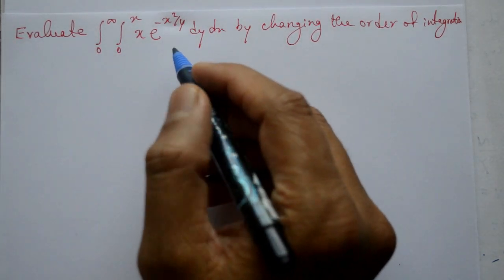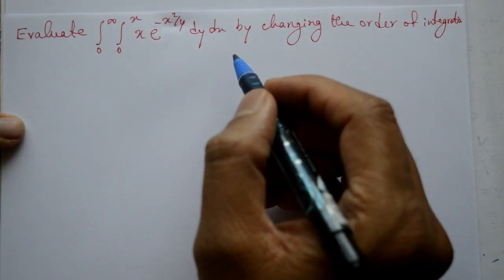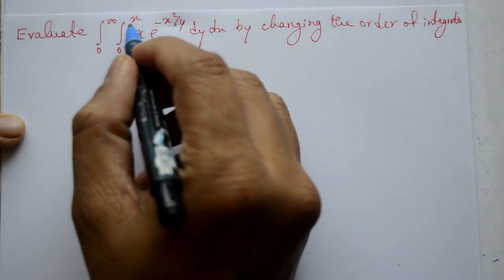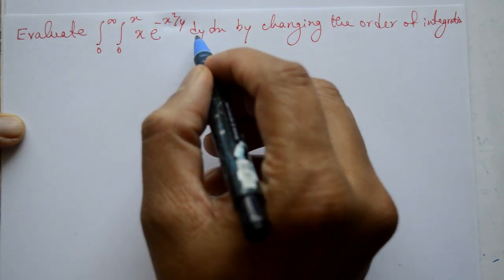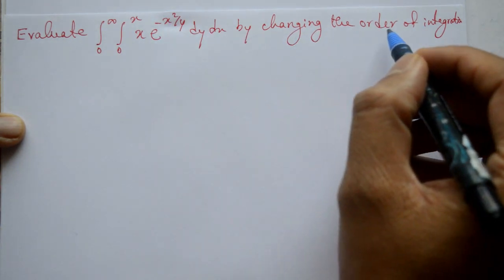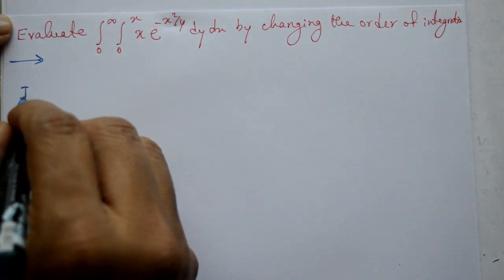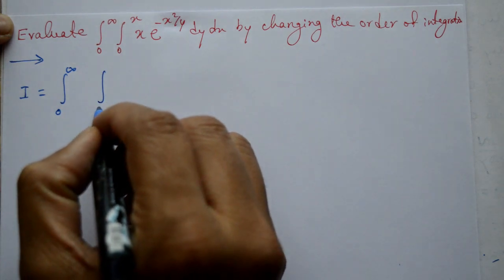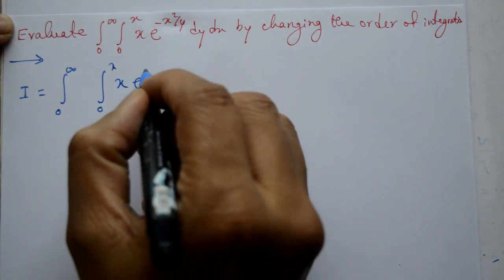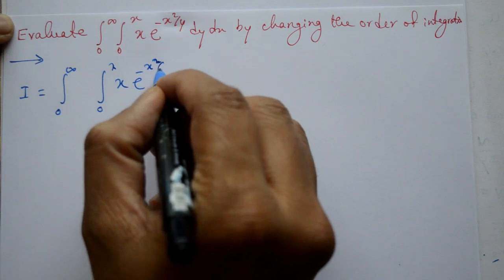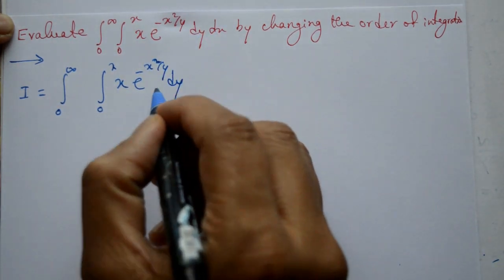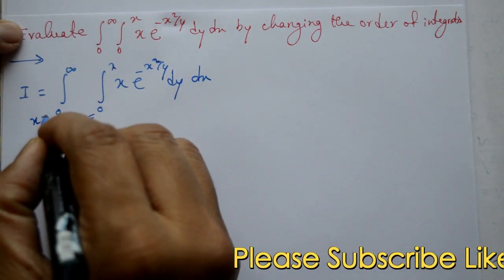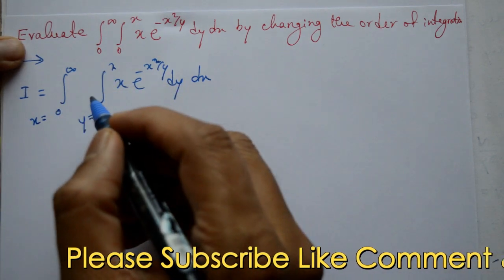Welcome friends, is problem ko solve karenge. A problem change of order of integration ke baare mein hai. Now evaluate: I = integration of 0 to infinity, integration of 0 to x, x into e raised to minus x square by y, dy dx. By changing the order of integration.